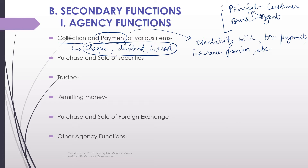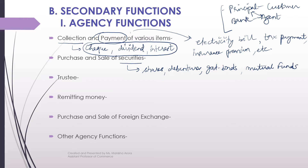The second agency function is the purchase and sale of securities. Securities include shares you want to purchase or sell, debentures to purchase or sell, government bonds you want to sell or purchase, or mutual funds and their units you want to invest in or exit. The commercial bank buys or sells such securities on your instructions. This is another agency function of the commercial bank.